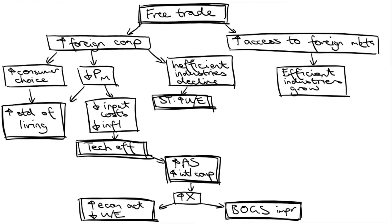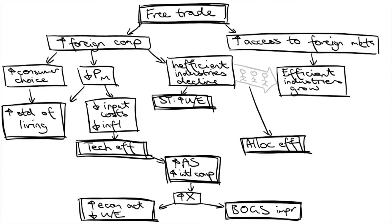As these domestic industries grow with a larger workforce, they will eventually absorb the structural unemployment from the inefficient industries. This shift of workers from inefficient to efficient industries is called allocative efficiency. As these efficient exporting industries increase in size, they will also achieve economies of scale.